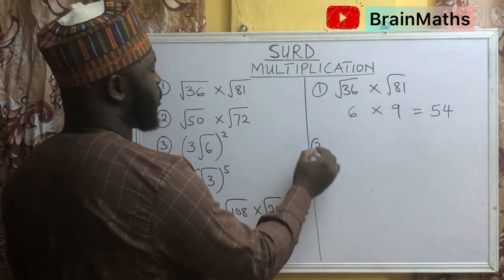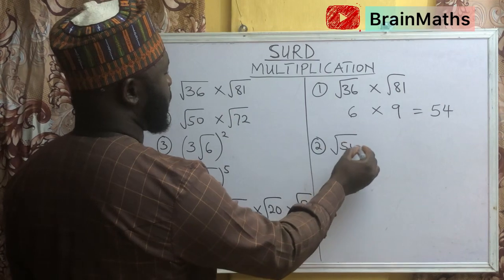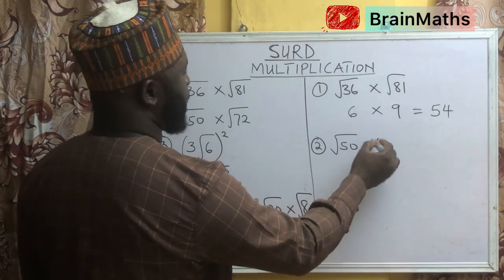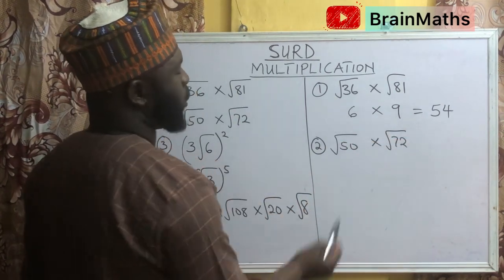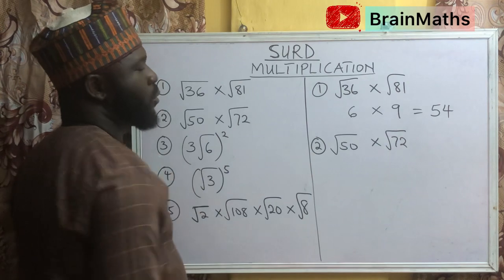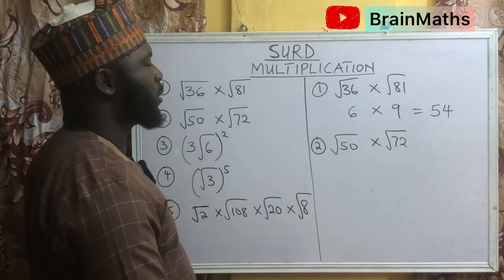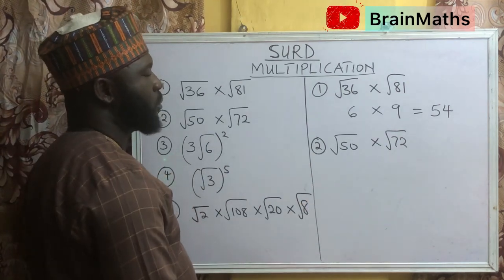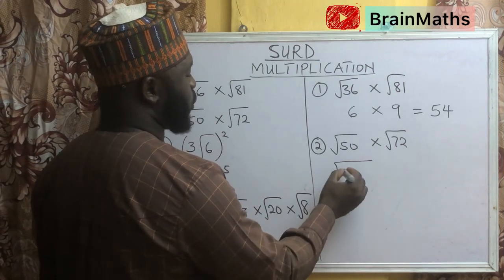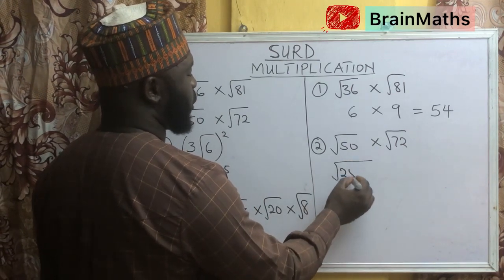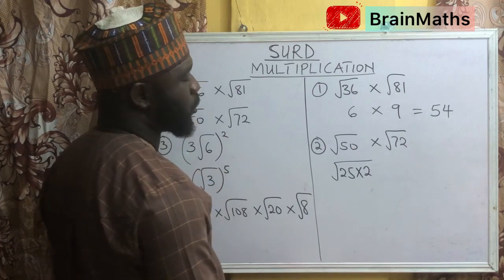Question number 2 says: square root of 50 times square root of 72. We have to break it down to get a perfect square root and another number which will multiply to give us 50, and that is 25 times 2.